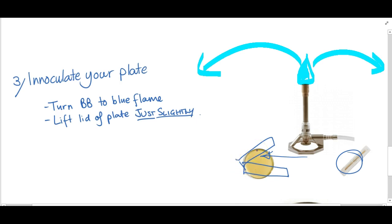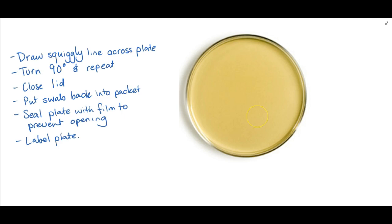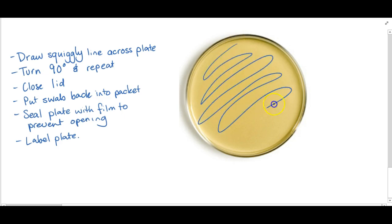When you're doing this you need to make sure that you very carefully swab across the plate, so you draw squiggly lines just like this across your plate. Then you turn your plate 90 degrees and you do squiggly lines again just to get a good cover across the whole plate.